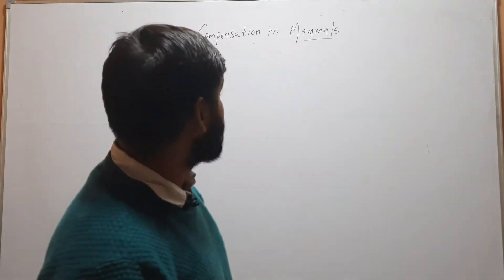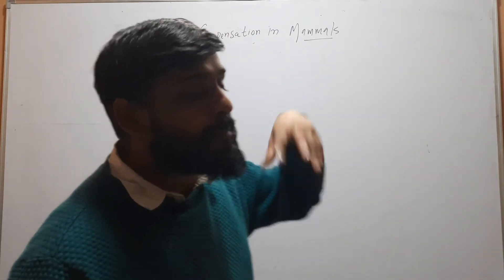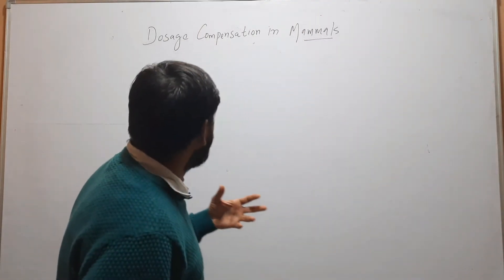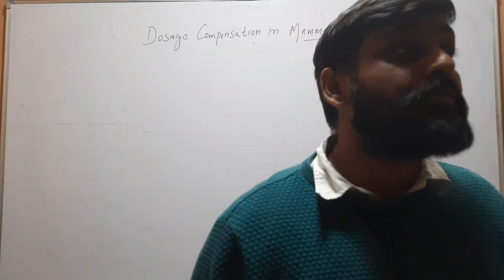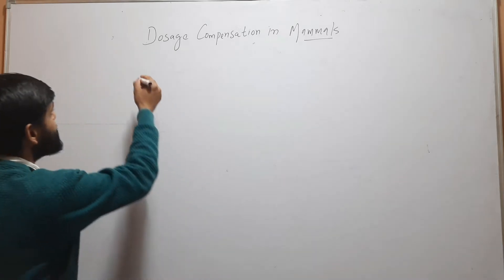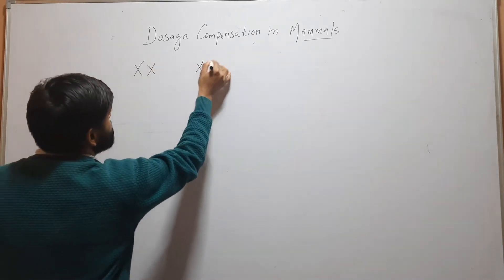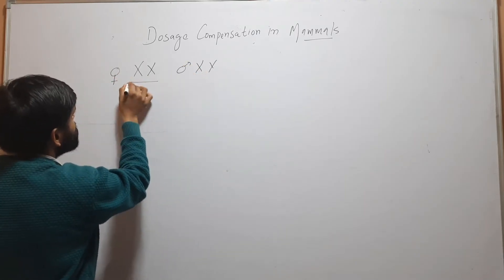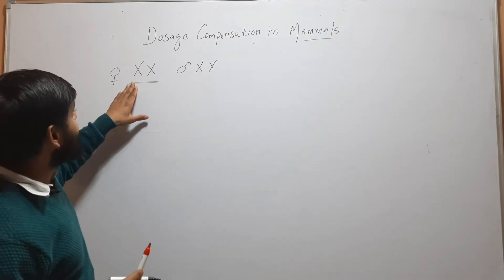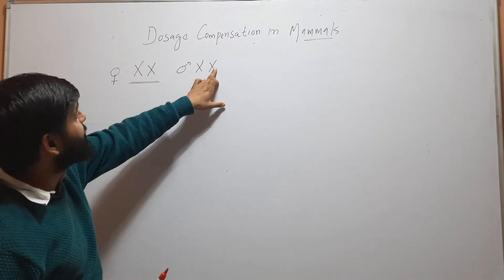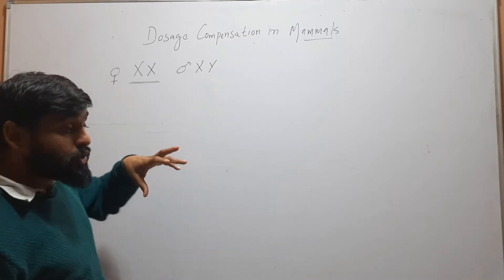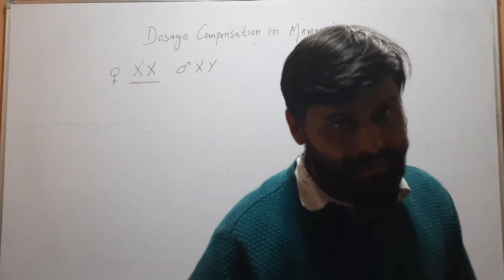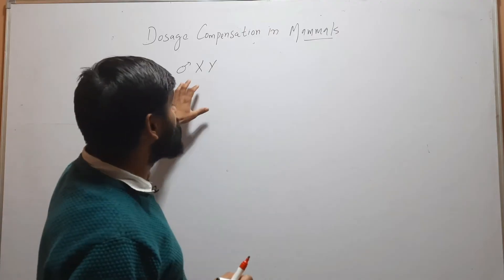Hello friends, welcome to my YouTube channel. In this video we will discuss the mechanism of dosage compensation in mammals including humans. In case of mammals, sex determination is XX and XY — XX is female, XY is male. In females there are two X chromosomes, but in males there is a single X chromosome, so the dose of X-linked genes is double in females, which is detrimental. The dose should be equal.